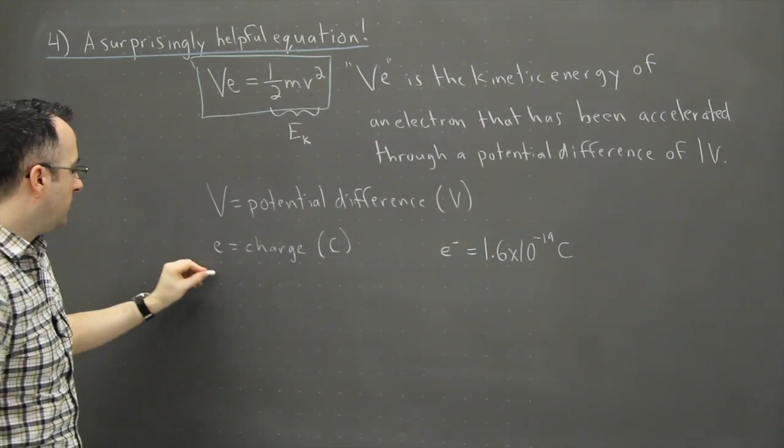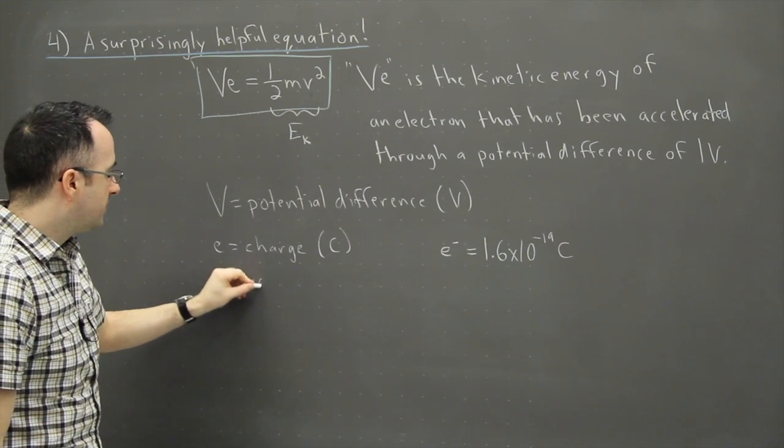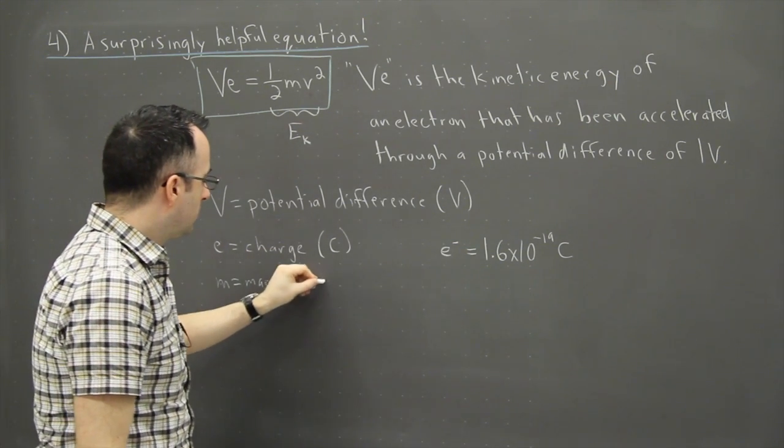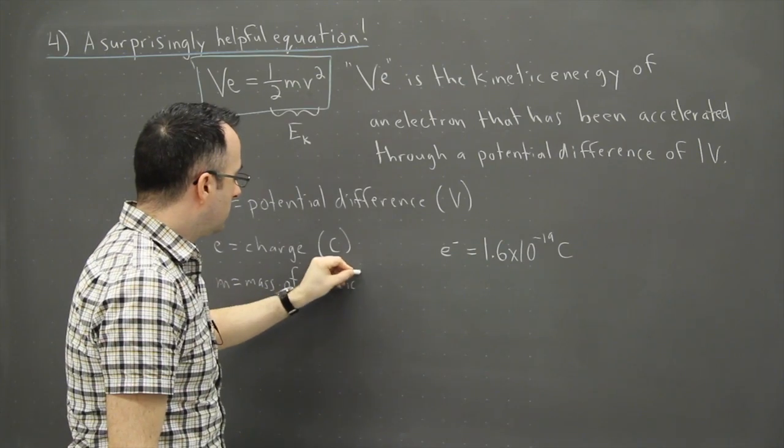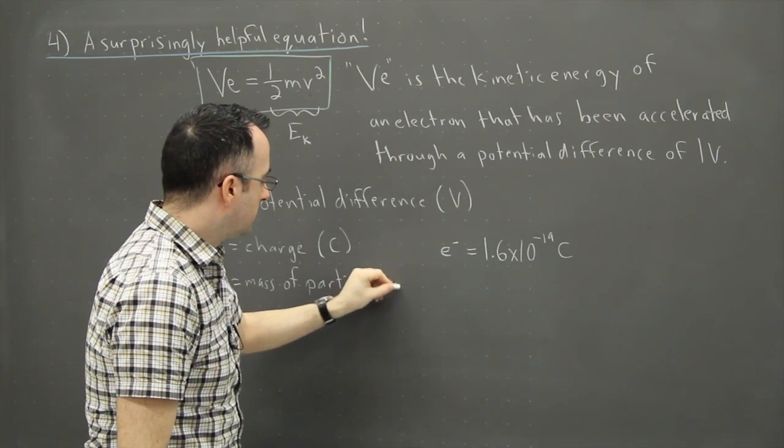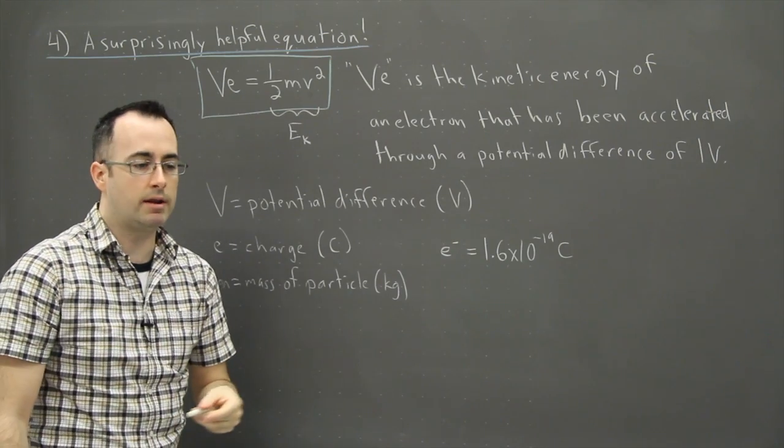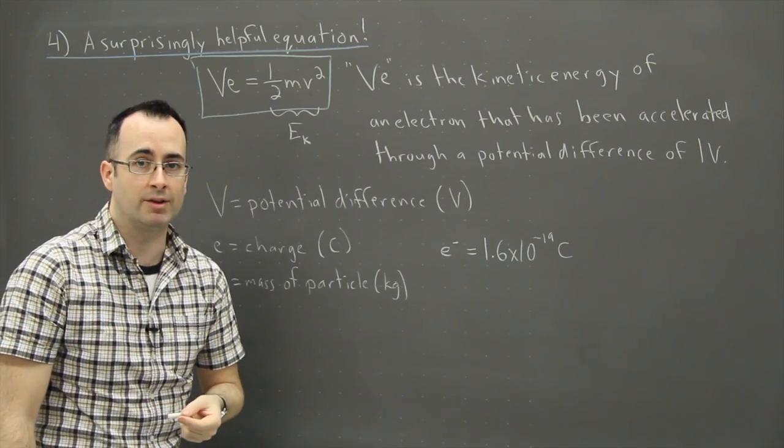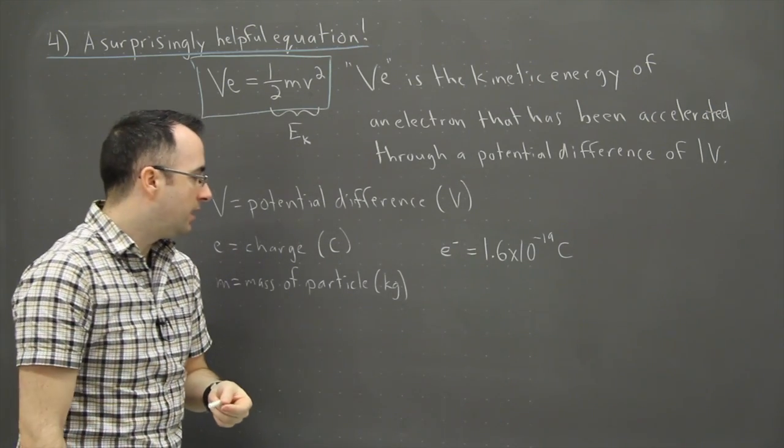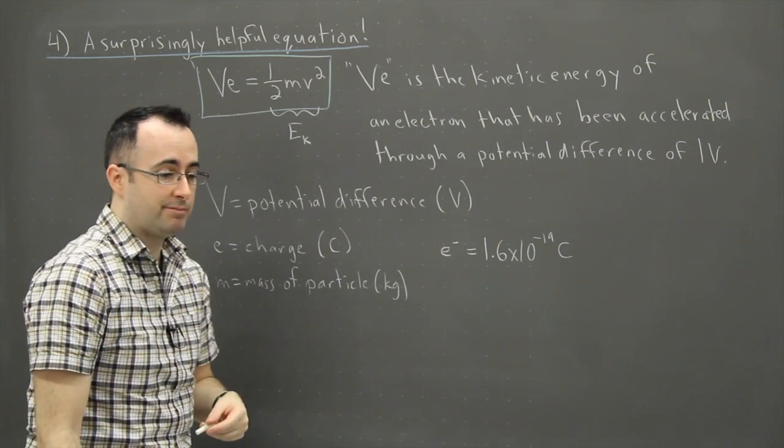Now, of course, M, well, that's the mass of the particle. And that's going to be in kilograms. So this could be an electron. We know the mass of an electron. It's about 9 times 10 to the minus 31 kilograms. So really small. But it could be a proton. It could be anything.